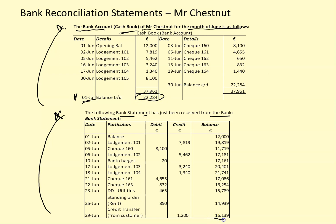The bank statement balance is 16,139, so there is a difference. What we have to do now is carry out a bank reconciliation statement, which we will do in two steps. Step one: we will trace items from the bank statement up to the bank account cash book of Mr. Chestnut to identify any issues, errors, or omissions in his records. Then step two: we will do the bank reconciliation statement.